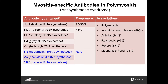JO1 antibody is the most common autoantibody marker, while the frequency of PL7, PL12, EJ, and OJ are less prevalent. These associations are variable with some core clinical manifestations, which include interstitial lung disease, arthritis, Raynaud's, fevers, and mechanic hands.